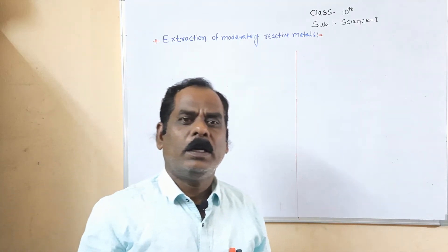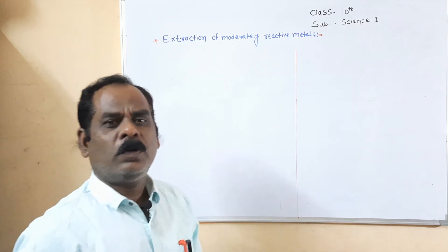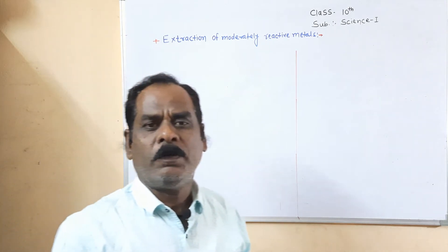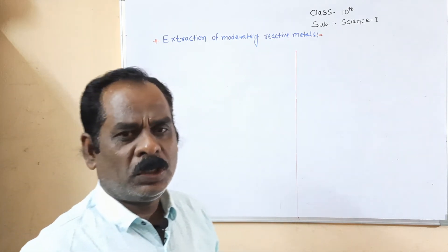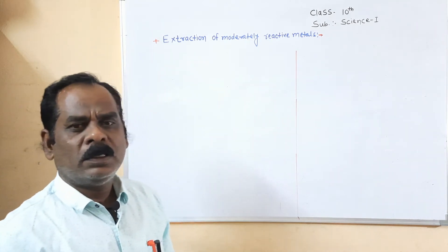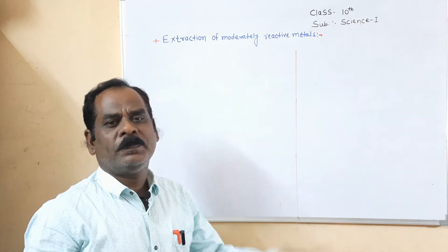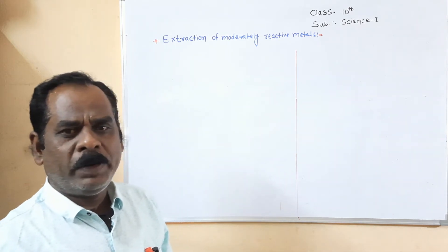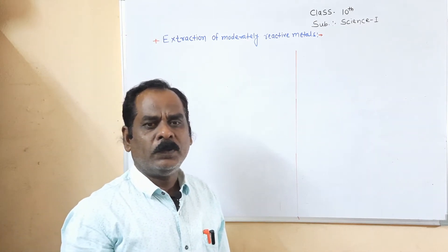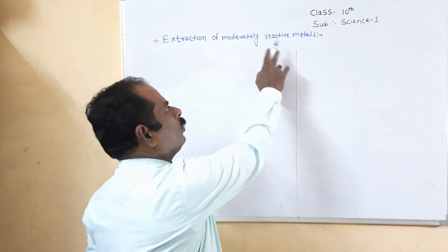Hello students. In the previous video we studied the extraction of highly reactive metals as well as the reactivity series of metals. Based on the reactivity series, metals are mainly classified into three types: highly reactive metals, moderately reactive metals, and less reactive metals. Today I will teach you the next point, which is the extraction of moderately reactive metals.